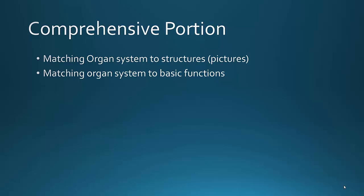If the picture contains mostly things like the lungs, the bronchi, the throat, the nose — that's going to be the respiratory system. If it has the kidneys, the ureters, the urethra, the bladder — that's the urinary system. So these should be really easy and should be give-me points on your exam.